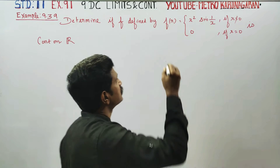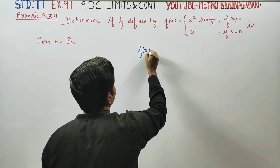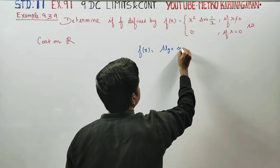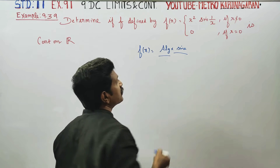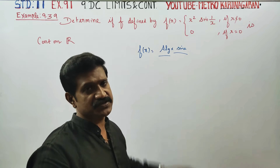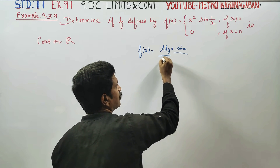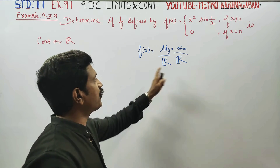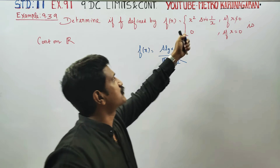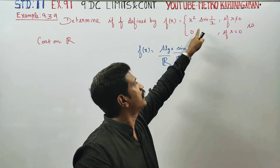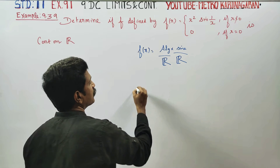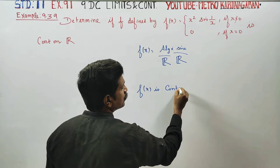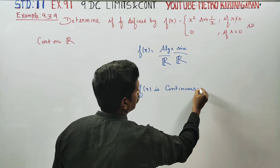F of x is a mixture of an algebraic function and a sine function. Algebraic function is always continuous on R. Sine function is always continuous on R. Therefore, f(x) is continuous on R — it is continuous on all real numbers.